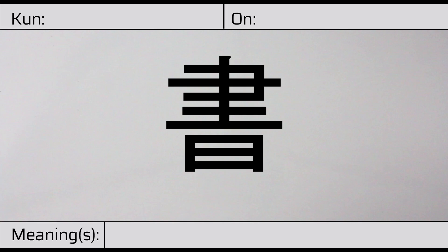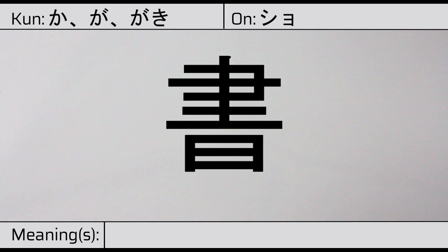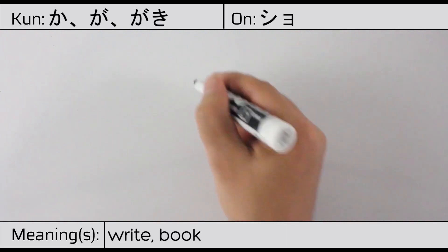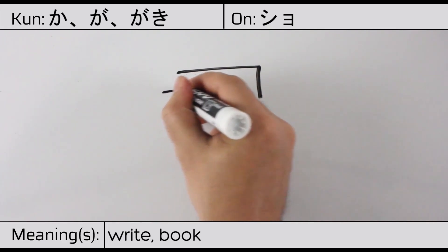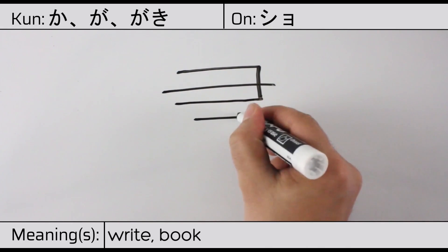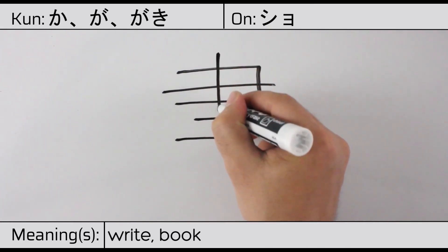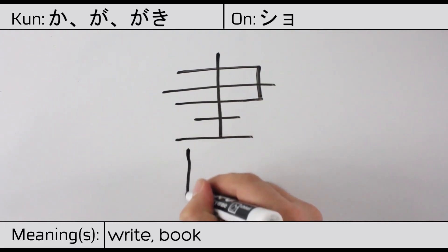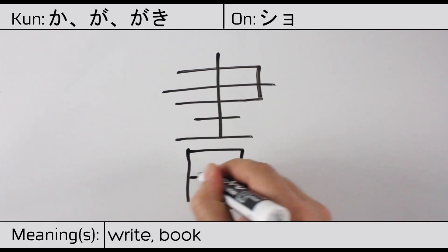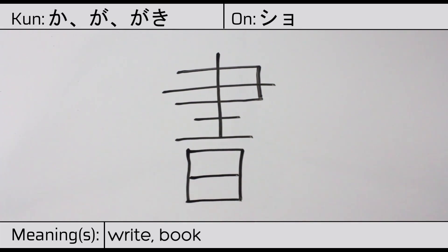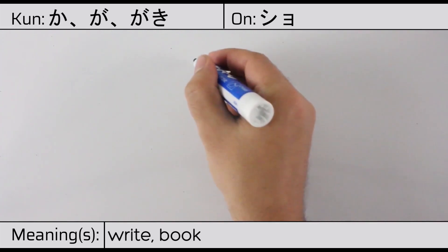Welcome to this lesson on Japanese kanji. Today, we'll be discussing this character. This kanji has kunyomi or Japanese readings of ka, ga, or gaki, and it has an onyomi or Chinese reading of shou. This character has the meanings write or book. Here is the stroke order.